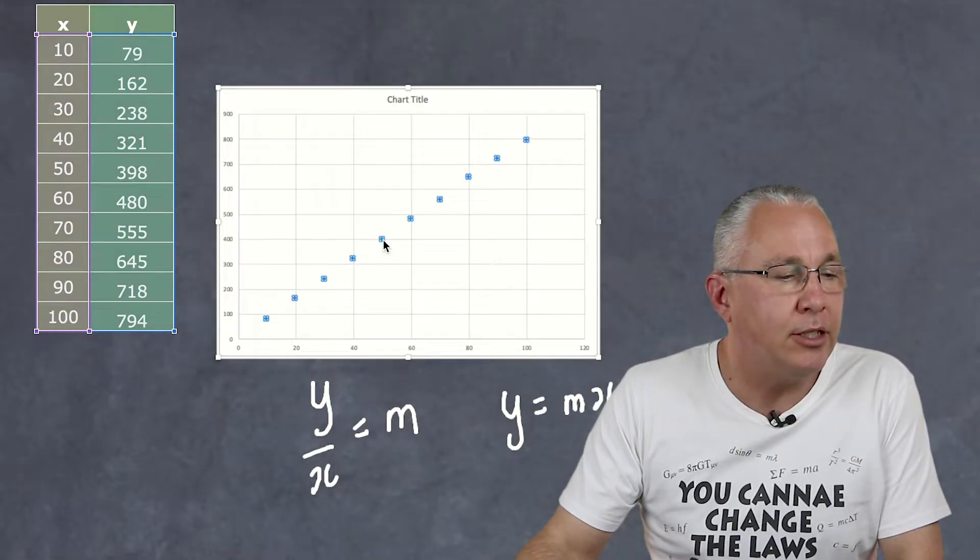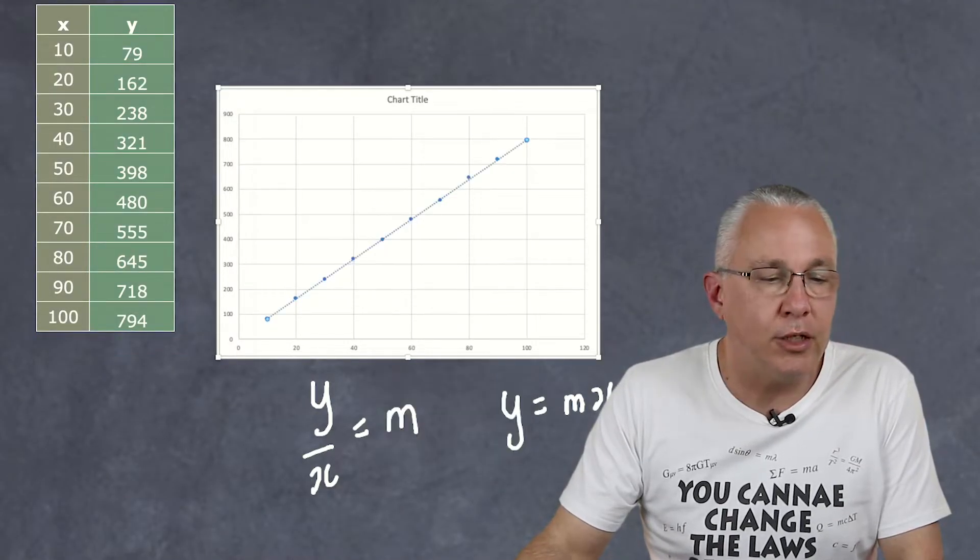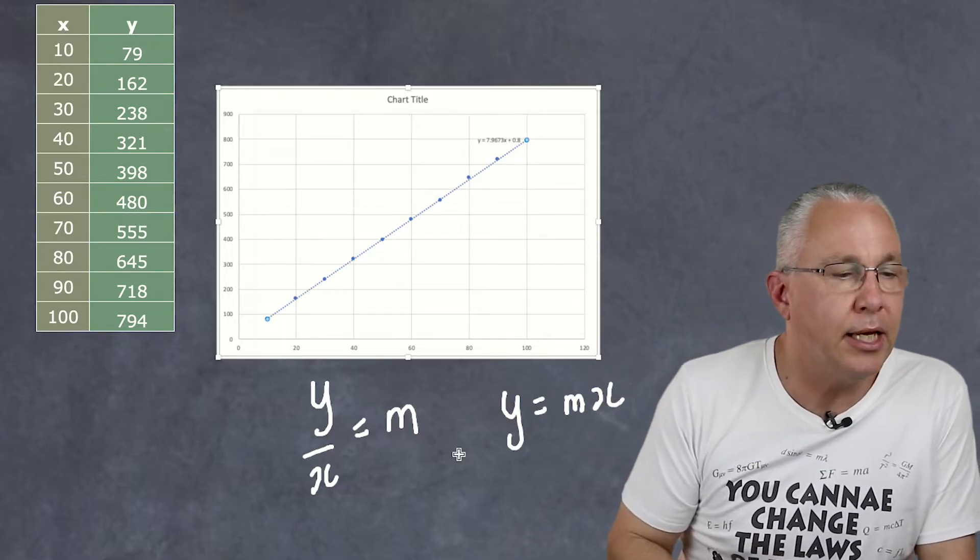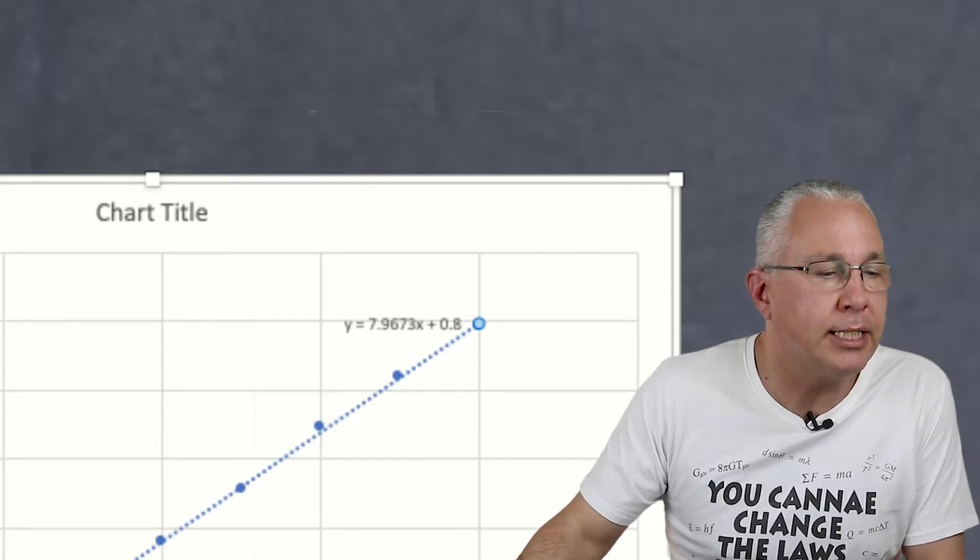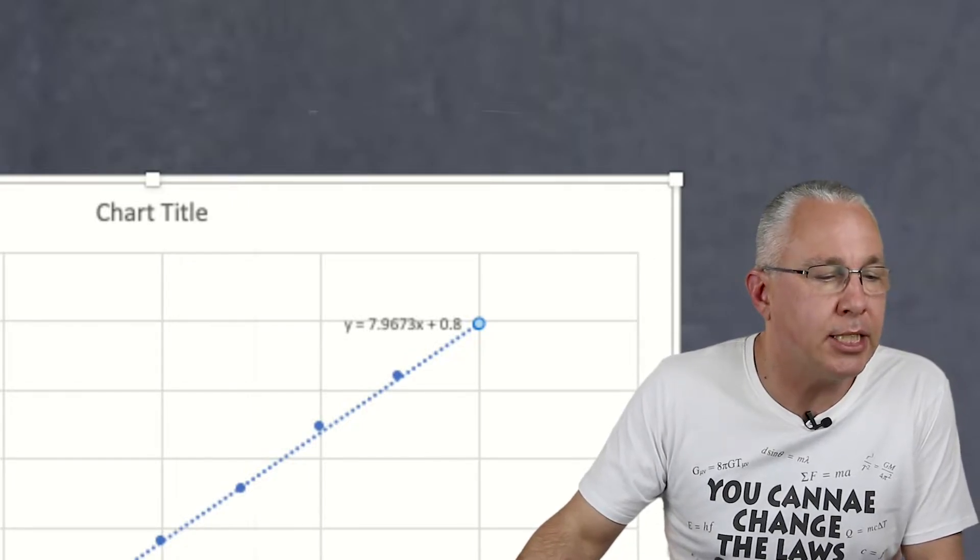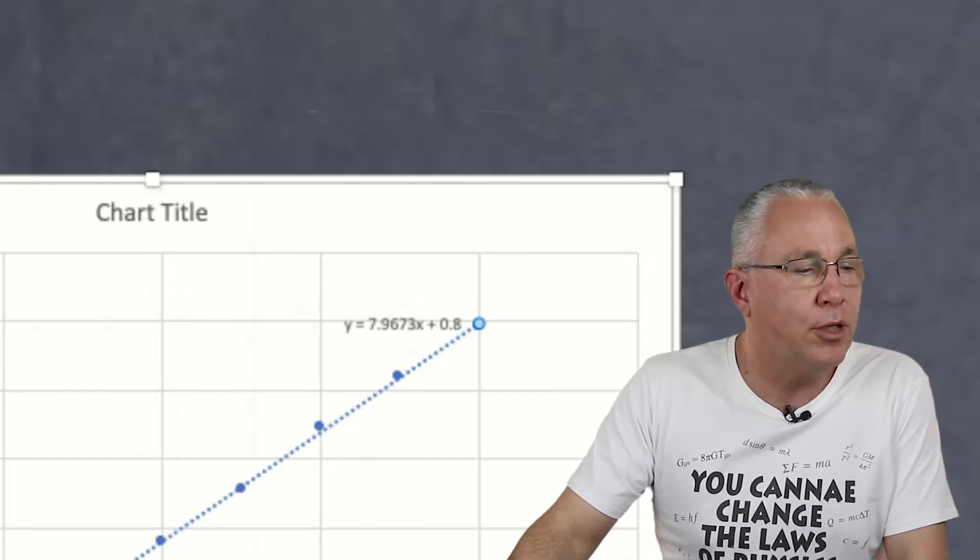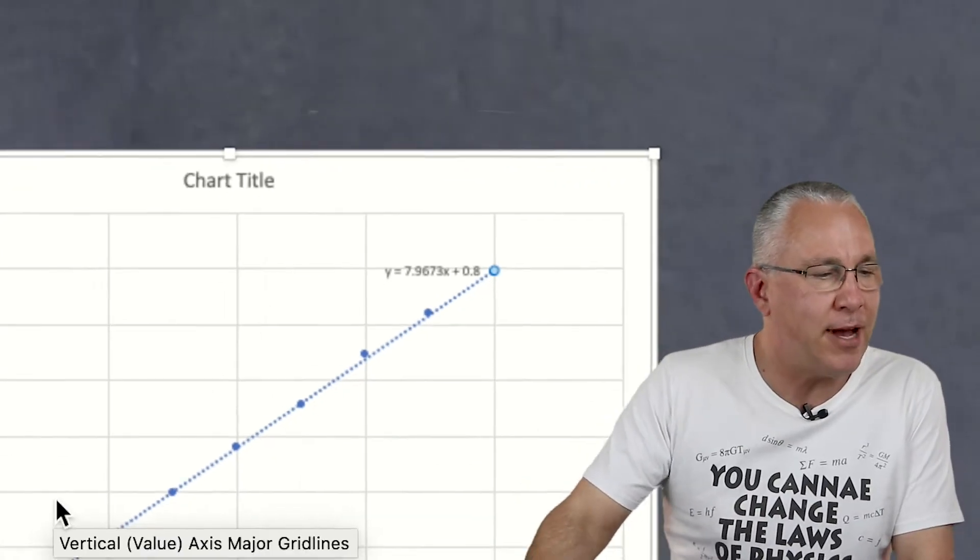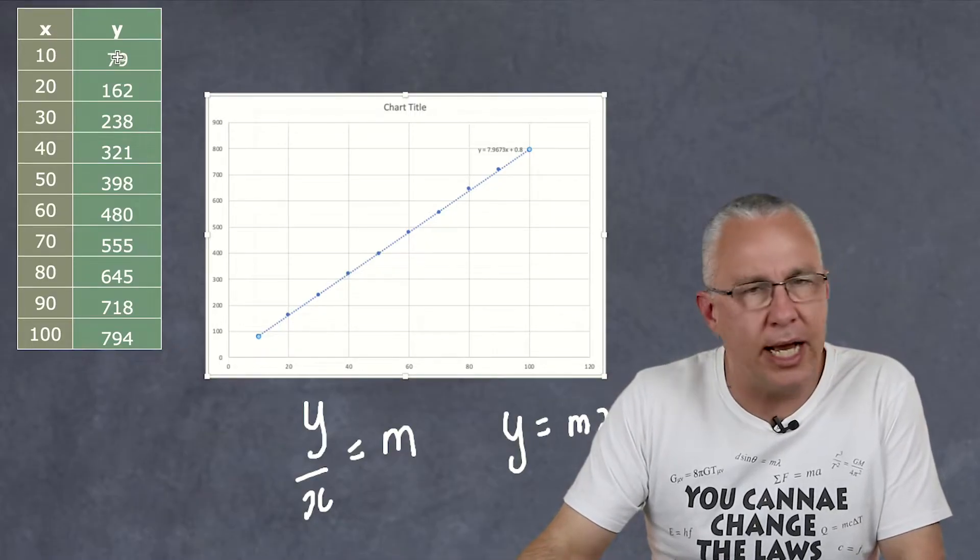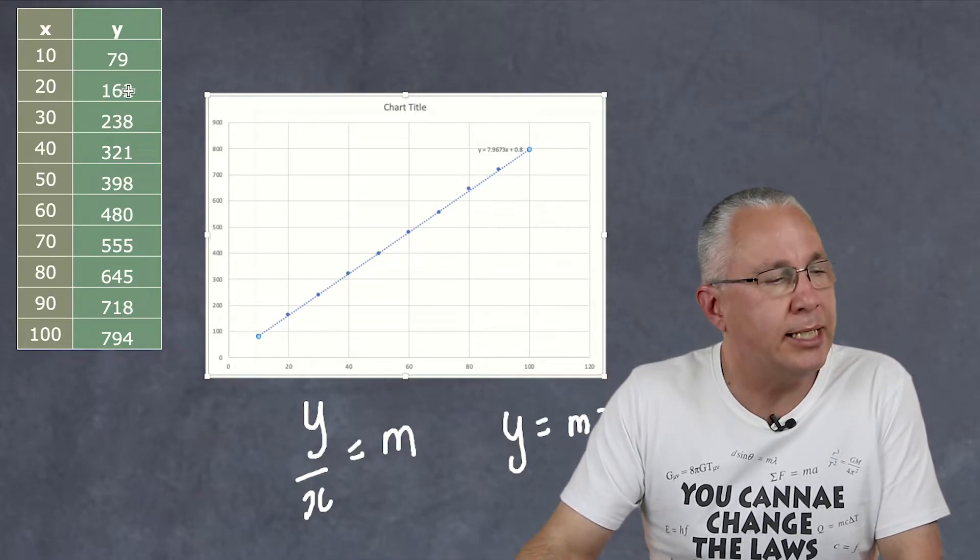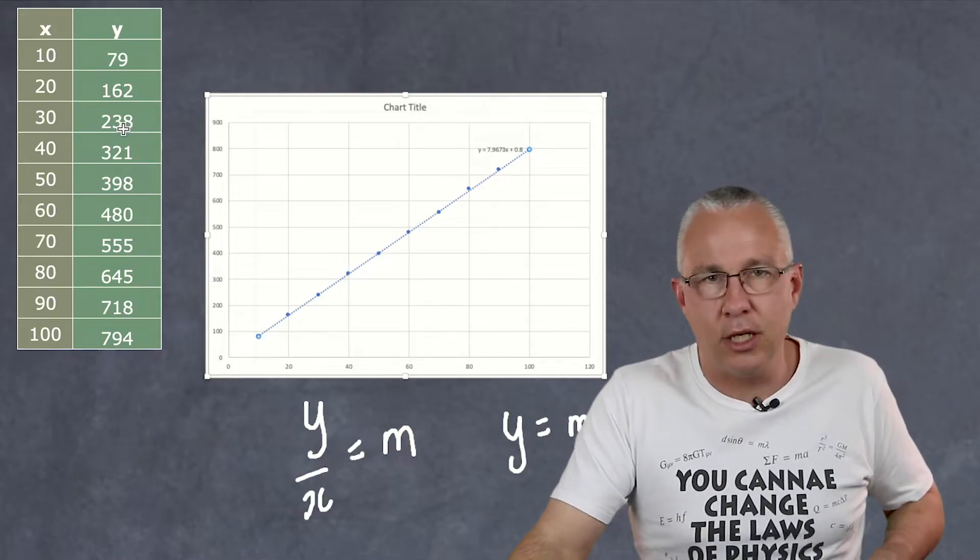I'm going to add a trend line to it and then what I can also do is set the equation. In this case here I've got a value of 7.96 basically times X. So that according to the graph is very close to 8. And in fact that makes sense. If you look at the data 10 times 8 is 79. Closely right? 20 times 8 is 160 and so that's close.